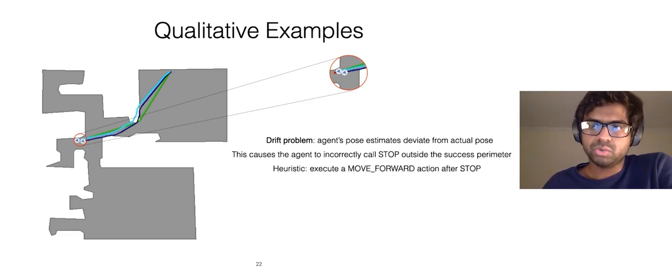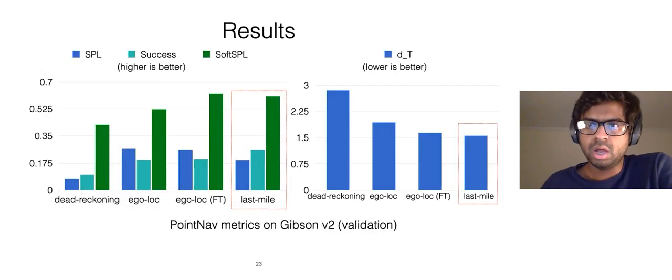To mitigate this, we apply a heuristic-based hack for the purposes of the challenge where we force the agent to execute a move-forward action once the policy has predicted stop before terminating the episode. We notice that with this last mile push, the agent succeeds more often and also ends up closer to the target on average.